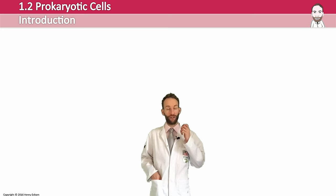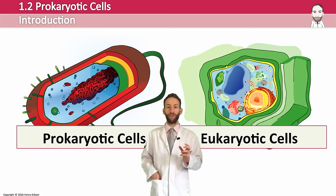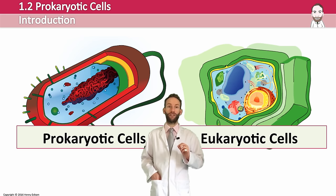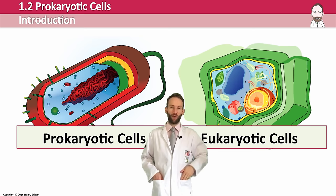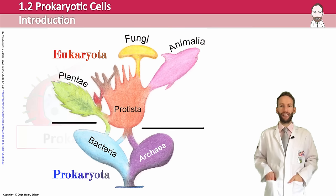All cells can actually be split into two categories: prokaryotic cells and eukaryotic cells. The difference between the two is that eukaryotic cells have a nucleus and prokaryotic cells don't have a nucleus. We've already talked about eukaryotic cells and their structure, but in this video we're going to be talking about prokaryotic cells.